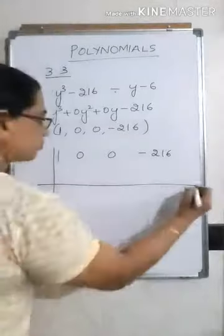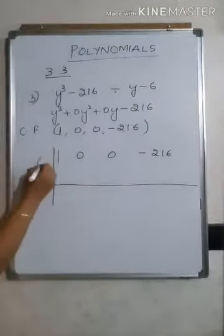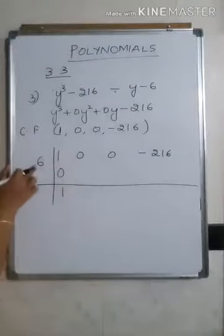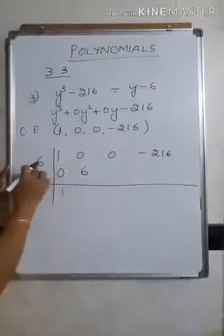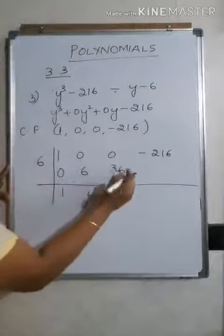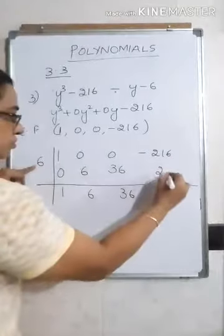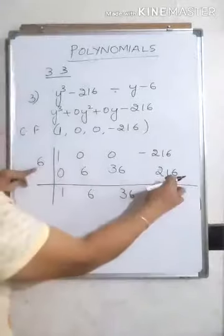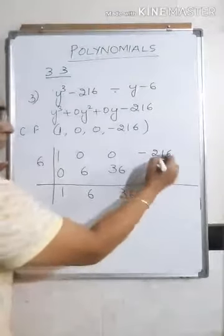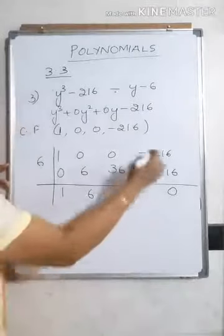Write the coefficients one beside the other: 1, 0, 0, minus 216. Draw a vertical and horizontal line. Here you have minus 6, so take the opposite sign: plus 6. The first value is always 0. So 1 plus 0 is 1. Then 6 times 1 is 6; 0 plus 6 is 6. Then 6 times 6 is 36; 0 plus 36 is 36. Then 36 times 6 is 216, so minus 216 plus 216 gives remainder 0.